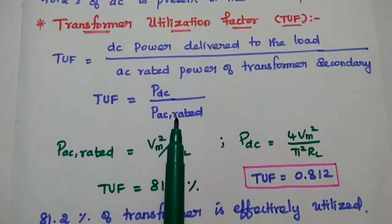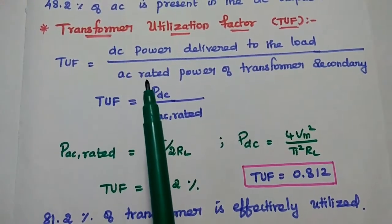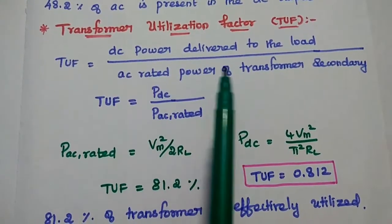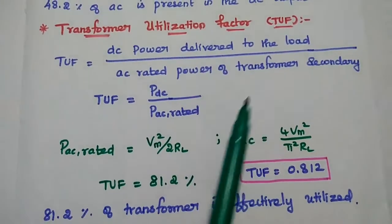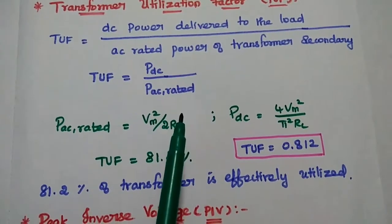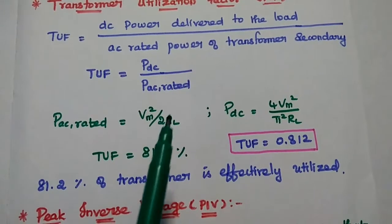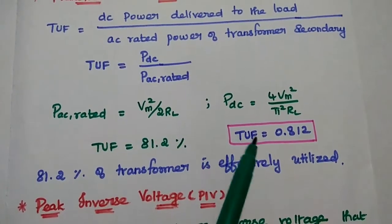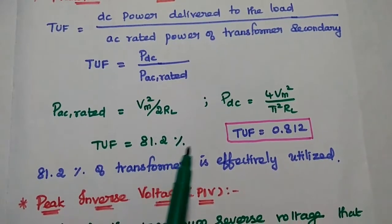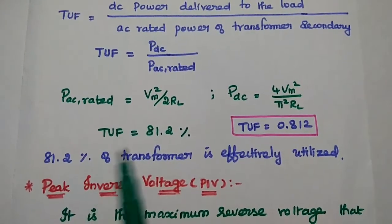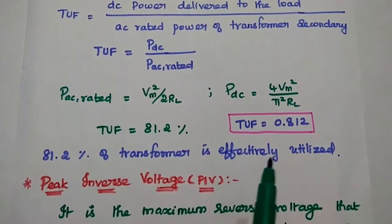Next is the transformer utilization factor, simply denoted as TUF. It is defined as the ratio of DC power delivered to the load to the AC rated power of the transformer secondary. Substituting the AC power and DC power values into the expression, we get TUF = 0.812, or 81.2%. This means 81.2% of the transformer is effectively utilized in the bridge rectifier, which is why it is widely used in real-time applications.